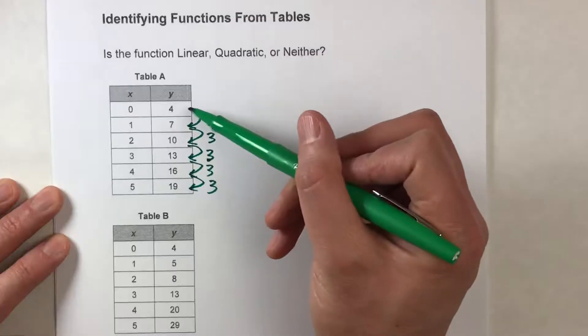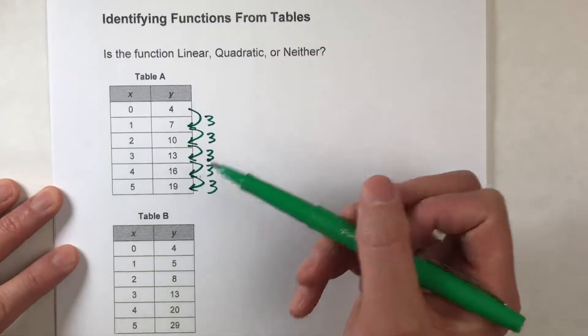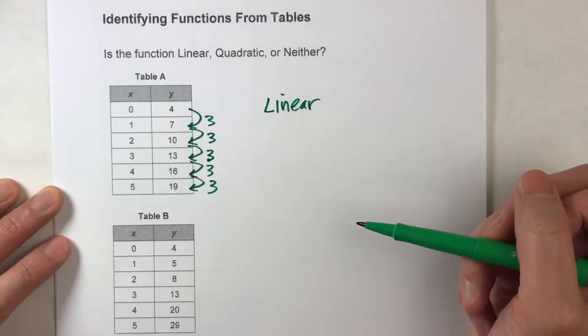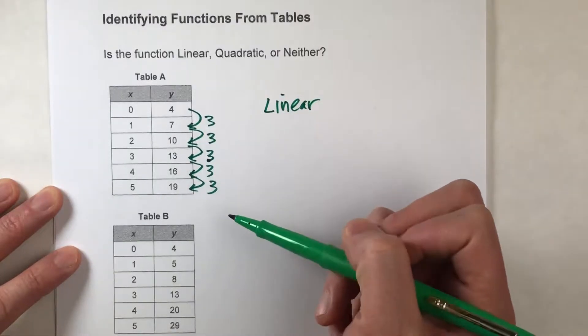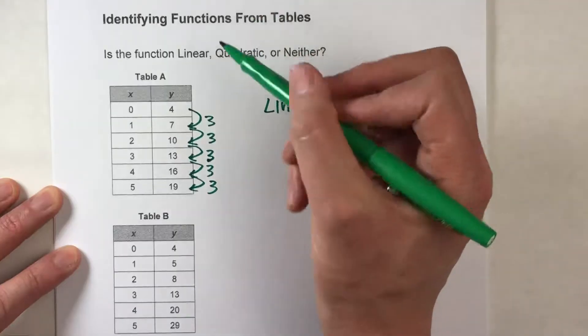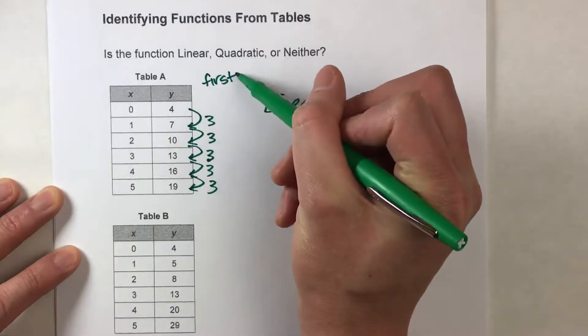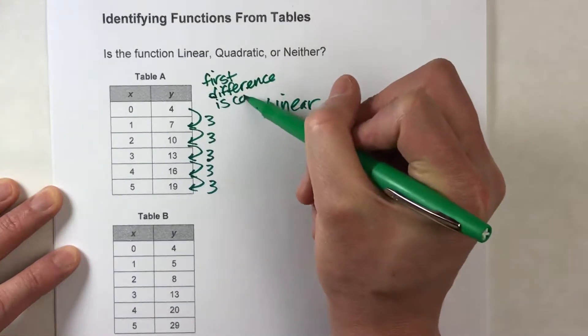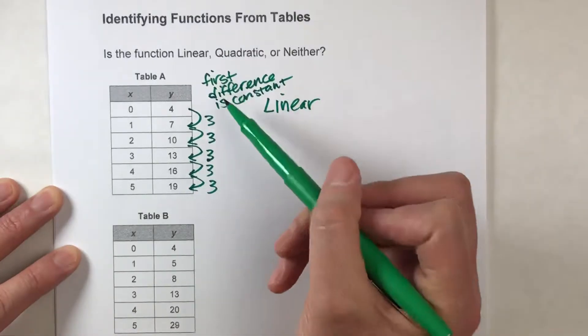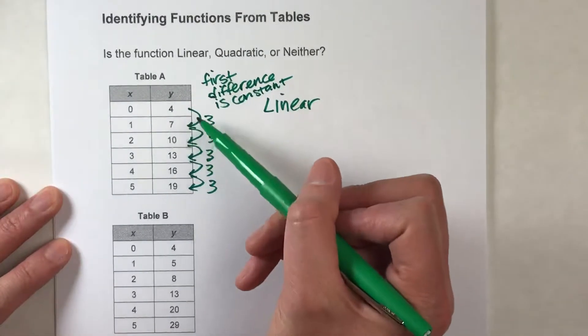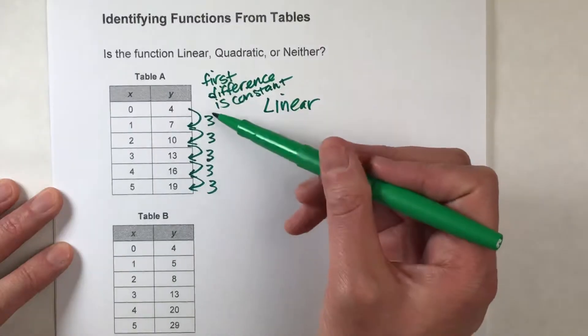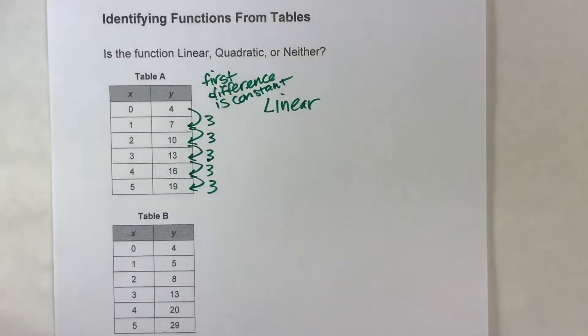So since it's repeatedly adding the same amount each time, we know that this is linear. And we say that it's linear because it's repeatedly adding the same amount every single time. Or you could think of it this way: that first difference is constant. What I mean by first difference is when I take the rows and I subtract them to find the difference between each row, I get the same number between every pair of rows. So that's how we know it's linear.